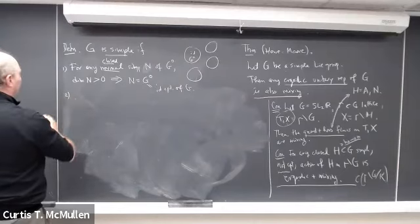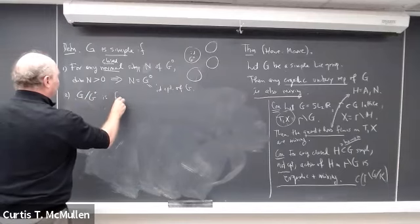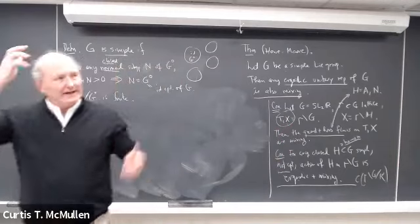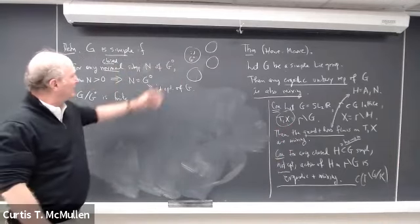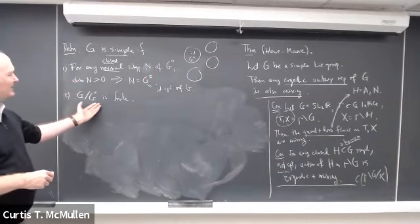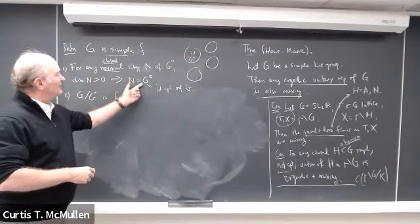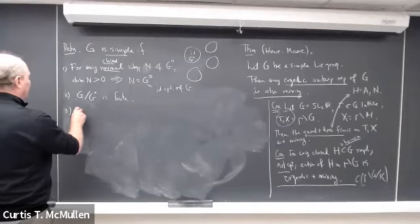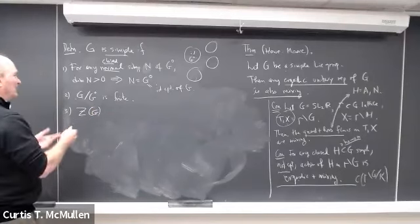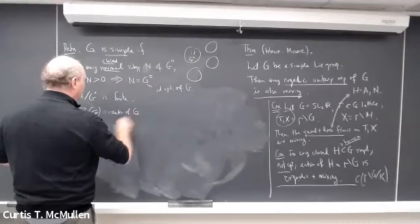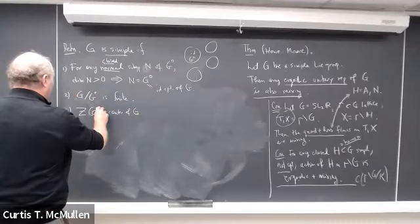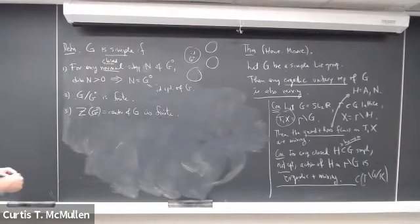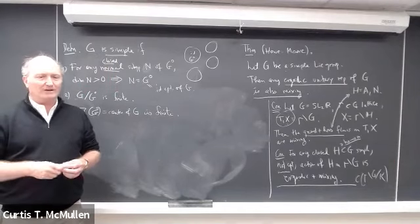There's a little more nuance. The second condition is that G/G₀ is finite — so for example, you could take a Lie group and take its product with a complicated discrete group, which would still satisfy condition one without changing G₀. The third assumption rules out abelian Lie groups: it says the center of G₀ — the elements that commute with everything — is finite.